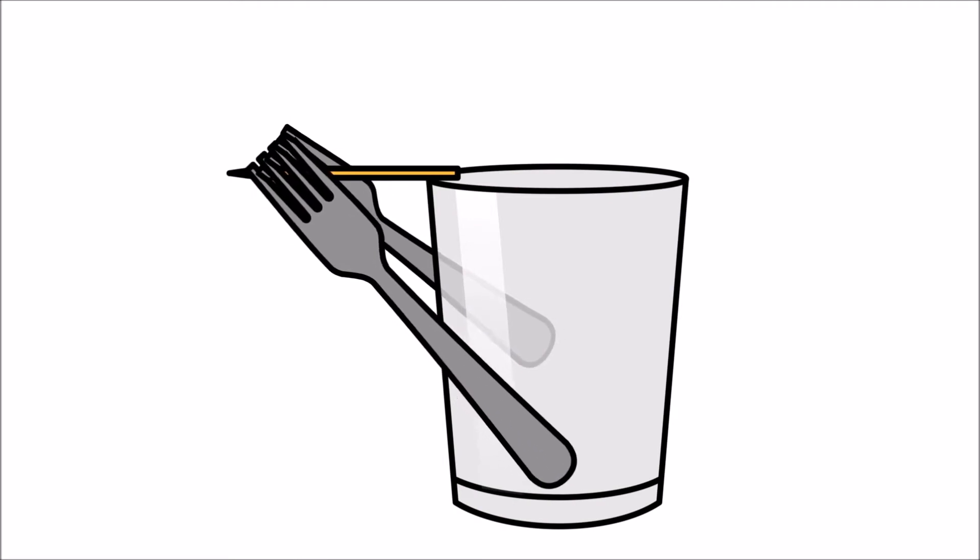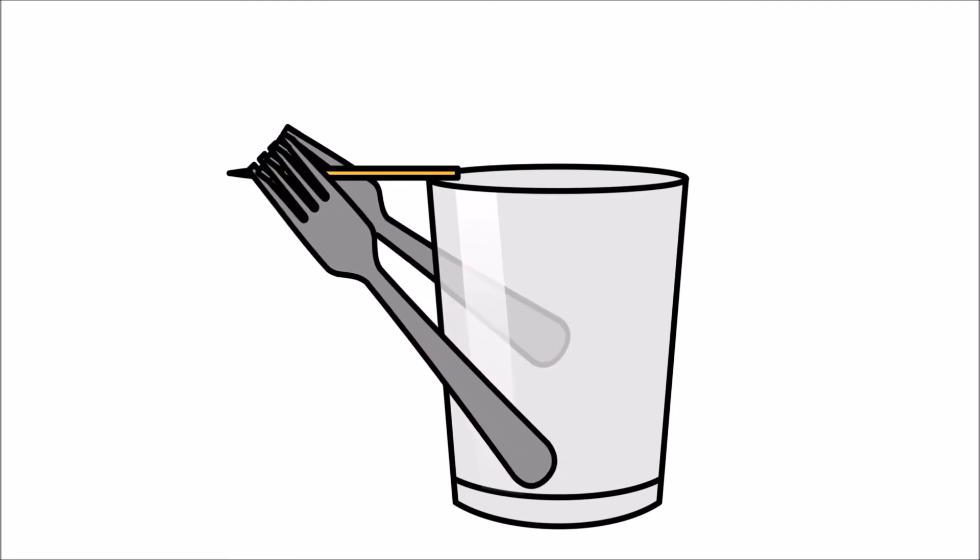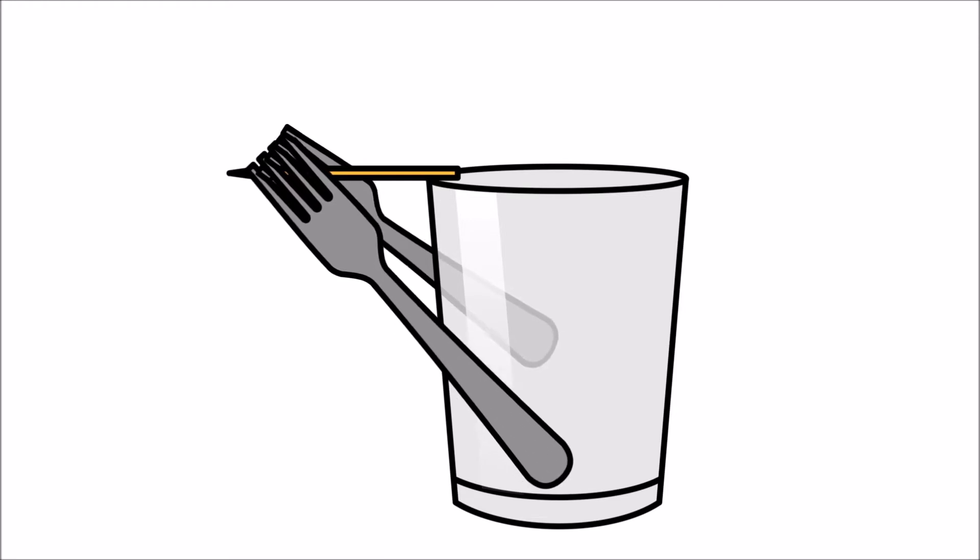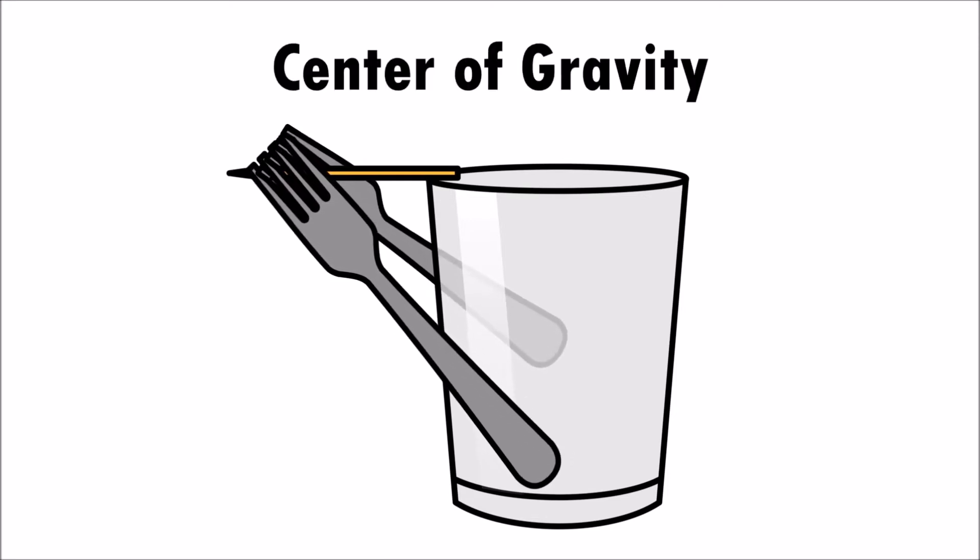The two forks are able to balance on the edge of the glass using only a toothpick because of a concept called center of gravity.